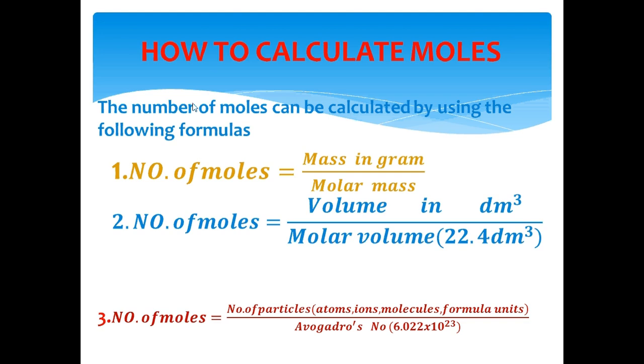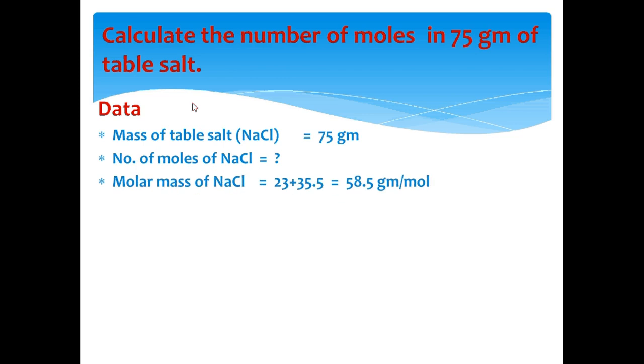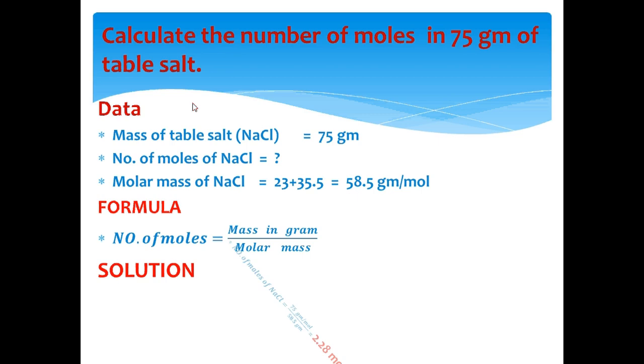On the basis of these formulas, we are going to calculate the number of moles. First example is calculate the number of moles in 75 gram of table salt. The data of this problem is given. The formula that will be used to find the number of moles is mass divided by molar mass. The answer is 1.28 moles of NaCl.